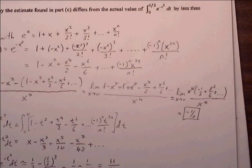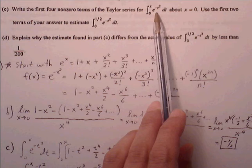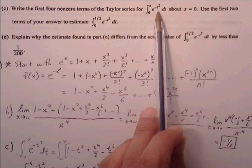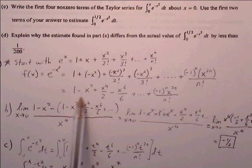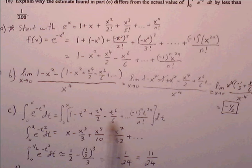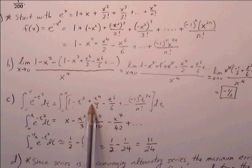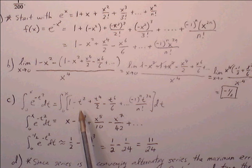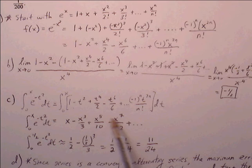Part C: write the first 4 non-zero terms of the Taylor series for the definite integral from 0 to x of e to the negative t squared. We know the Maclaurin series for e to the negative t squared from part A, so we integrate term by term using the power rule. The term 1 becomes t, t squared becomes t cubed over 3, t to the 4th becomes t to the 5th over 10, and t to the 6th over 6 becomes t to the 7th over 42.